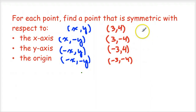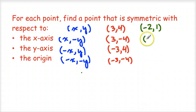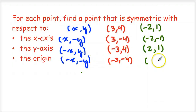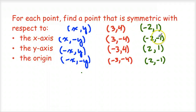What if we take the point (-2, 1)? For symmetry to the x-axis, we take the opposite of y: (-2, -1). For symmetry to the y-axis, we take the opposite of the x-coordinate — the opposite of negative 2 is 2 — so the symmetric point is (2, 1). For symmetry with respect to the origin, we take the opposite of both: the opposite of -2 is 2, and the opposite of 1 is -1, so the point is (2, -1).